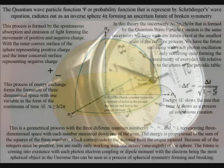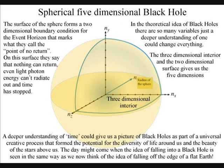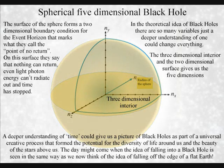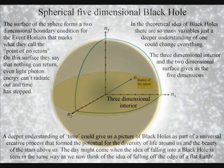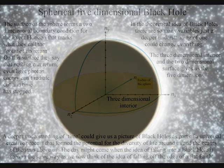This theory gives us a deeper understanding of time, quantum mechanics, and relativity that would change our view of black holes completely. In this new research they say that in our three-dimensional universe, black holes have a two-dimensional event horizon - they are surrounded by a two-dimensional boundary that marks what they call the point of no return. On this surface they say nothing can return, even light photon energy can't radiate out - time has stopped.